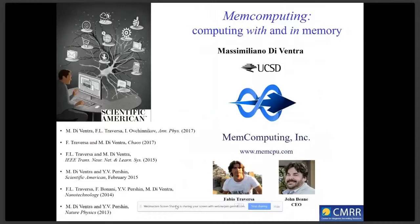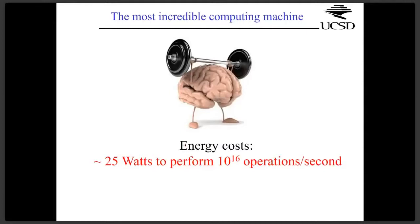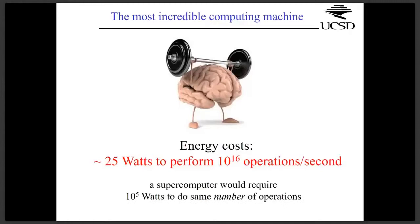You will see on the left of the screen some references if you're interested in learning more. This is inspired by the brain, and it is topological in the sense that it is very robust against noise and structural disorder. Ideas were taken from the brain itself, which is the most incredible computing machine. It uses very little energy—about 25 watts to perform 10 to the 16 operations per second. If you try to do the same on a supercomputer, it would require orders of magnitude more than 25 watts, and that's not even matching the quality of operations done by the brain.